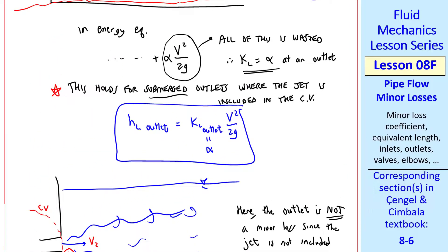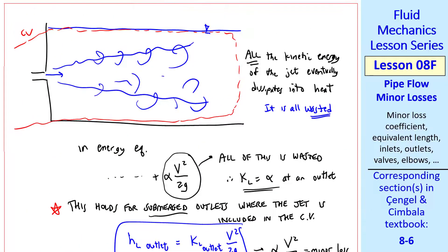Whereas in this case, we have alpha V squared over 2g as a minor loss, but the V2 term in this part of the energy equation is zero, since our outlet 2 is up here, where V2 is approximately zero.